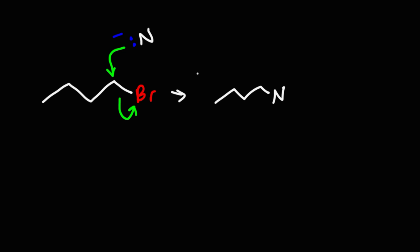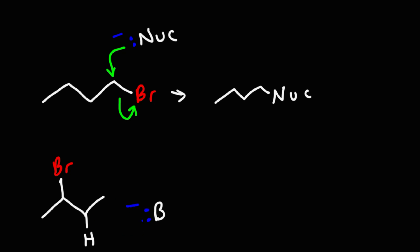In this case the leaving group, the bromide ion, is going to leave and we're going to replace it with the nucleophile. Now a base will do something different. So let's say we have 2-bromobutane and we have a strong base. Rather than attack on a carbon atom, a base will go for a proton — it'll abstract the hydrogen atom. In this case you would get an E2 reaction as opposed to an SN2 reaction. So within organic chemistry, a nucleophile typically goes after a carbon atom whereas a base will go after a hydrogen atom, and that's a key difference between the two.